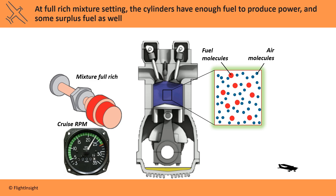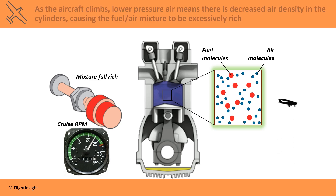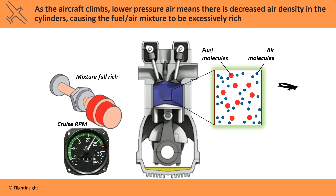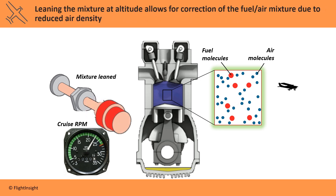Because the engine will typically be operating very hot at takeoff and fuel acts as a coolant, the full-rich setting will be used for takeoff at airports relatively close to sea level. As the aircraft climbs, lower pressure air means decreased air density in the cylinders, causing the fuel-air mixture to be excessively rich. Leaning the mixture at altitude allows for correction of the fuel-air mixture due to reduced air density.